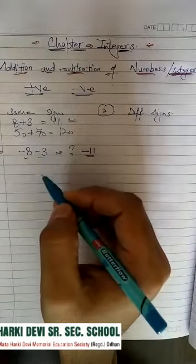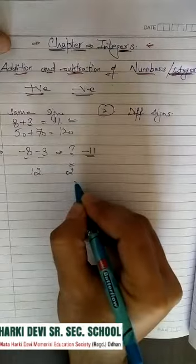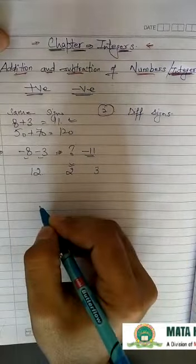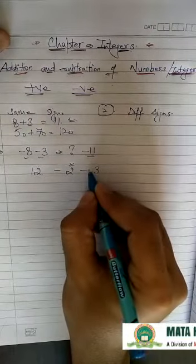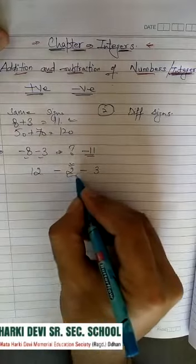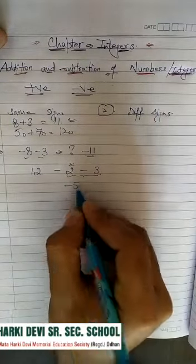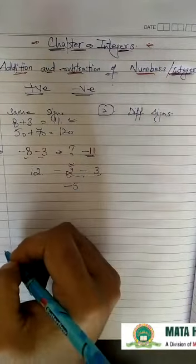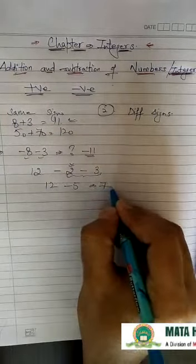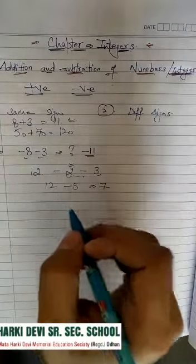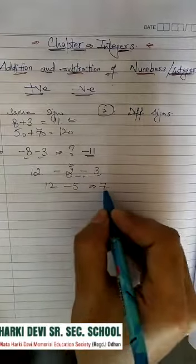Let us take another example. I had 12 pens. On the first day I lost 2 pens, and on another day I lost 3 pens. How do we write this mathematically? I lost 2 pens is minus 2, and I lost 3 pens is minus 3. The result of these two is minus 5, meaning I lost 5 pens total. So 12 minus 5 equals 7.